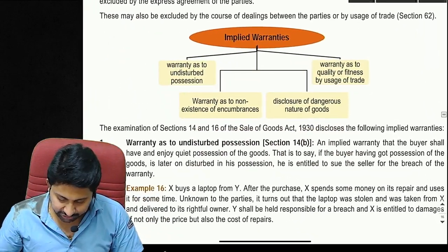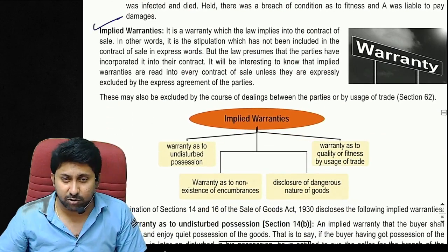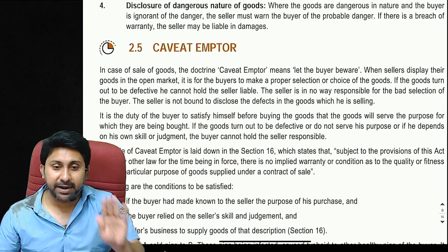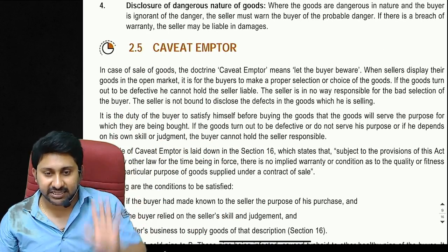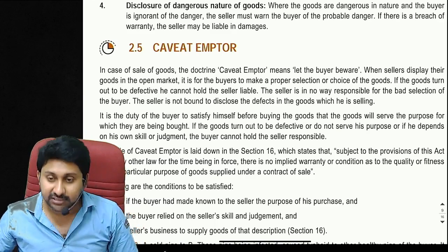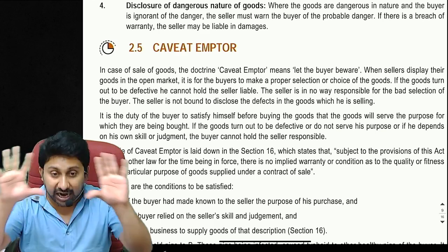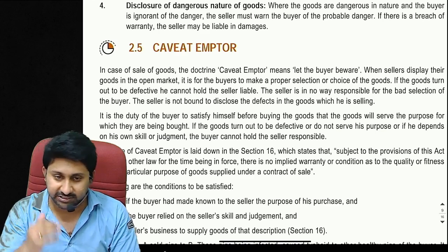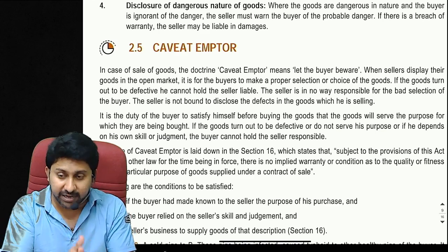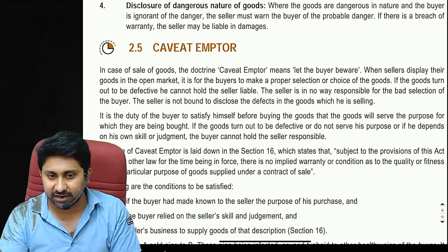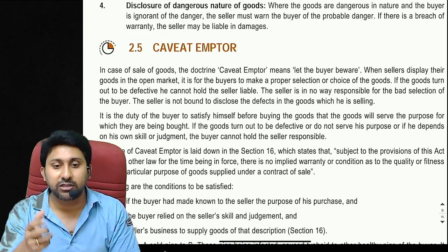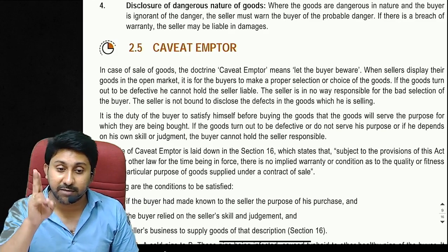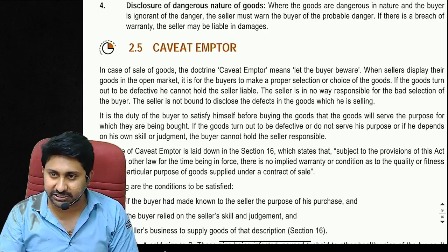Implied warranties: just read and understand — it is a straightforward concept. The caveat emptor concept will be discussed in chapter four on unpaid sellers. This covers the whole idea behind unit two of the Sale of Goods Act. A normal session on this chapter takes four to six hours with examples and notes, but the core concepts needed to pass the exam have been covered here. Thank you very much.